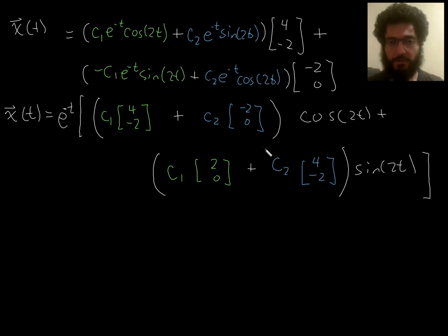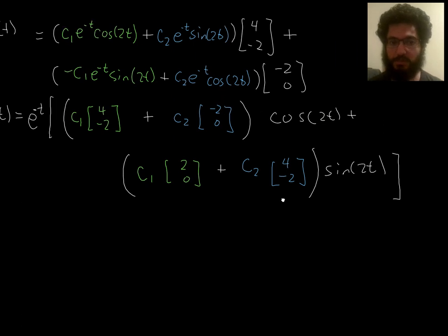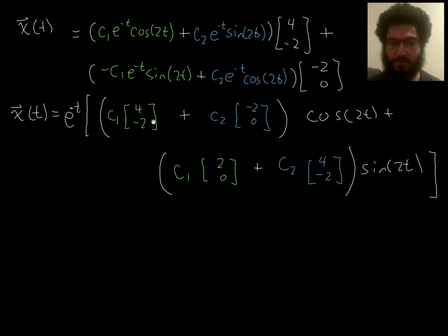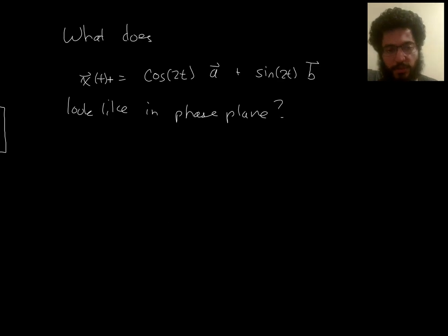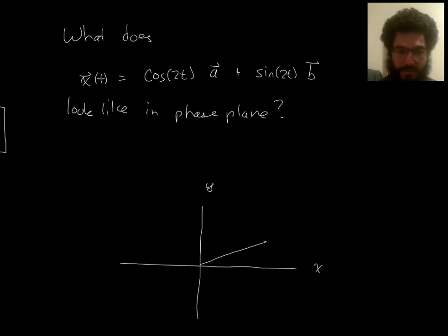So I think we could use a sort of side investigation right now of just that general question of, like, what does cos(2t) vector plus sin(2t) vector look like just in general. And then we can come back and then think about, okay, well, if you have the particular vectors that are being formed here, then what would that look like? So let's start with a general question. The general question, what does it look like when you do this? Say you have two vectors, a and b, in the phase plane.